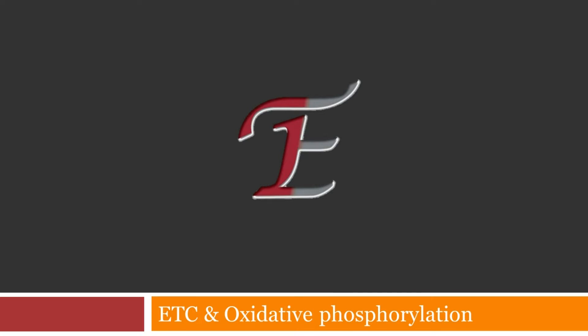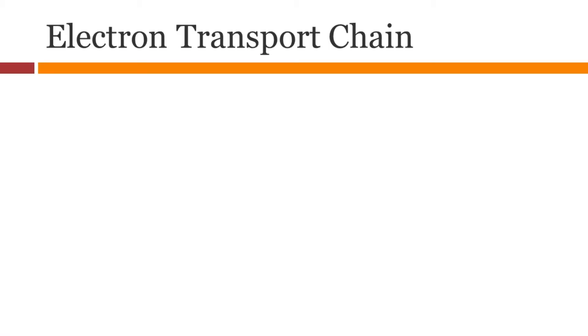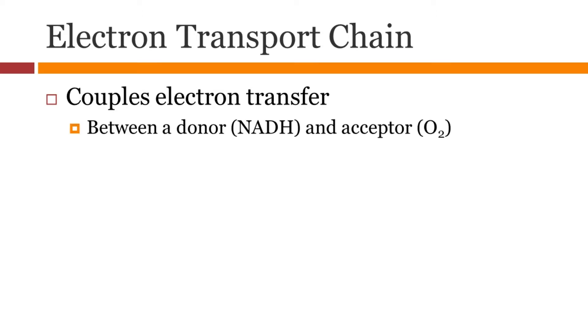Let's look at electron transport chain as well as oxidative phosphorylation. Electron transport chain couples the transfer of electrons between a donor such as NADH and an acceptor like oxygen.